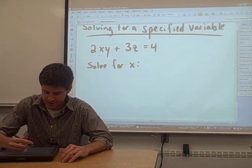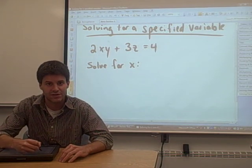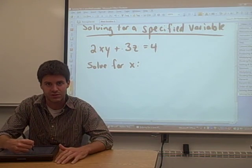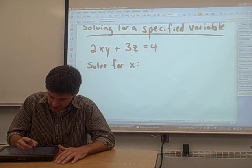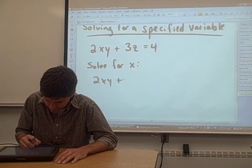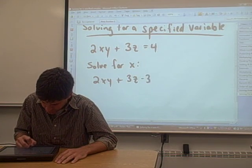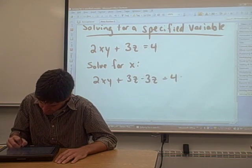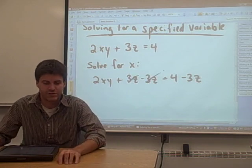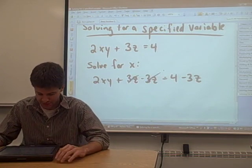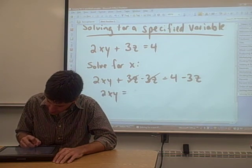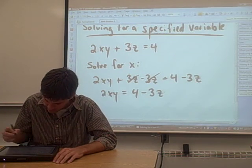In order to get the 2xy term — the term with the x in it — by itself on one side of the equation, we have to get rid of this 3z. The way that we do that is we subtract 3z from both sides of the equation. When we do that, the 3z on the left-hand side of the equation cancels out. Then what we're left with is 2xy equals 4 minus 3z.